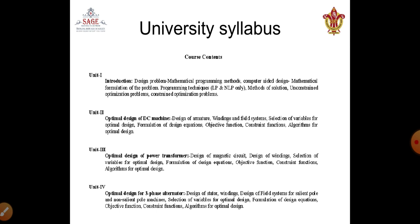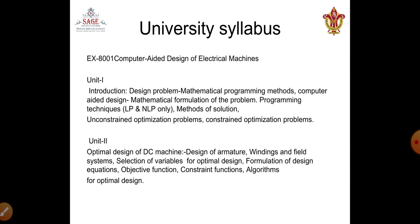These outcomes are mainly derived from the course content. As you know, the syllabus is divided into five units. The first unit is the introduction, which mainly discusses mathematical formulations under linear, non-linear, constrained, and unconstrained optimization problems. The second unit deals with DC machine optimal design, the third with power transformer optimal design, the fourth with three-phase alternator optimal design, and the fifth with three-phase induction motor design.